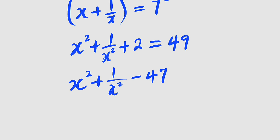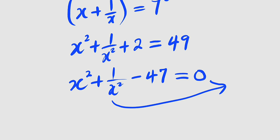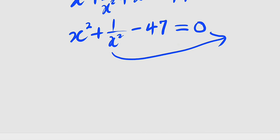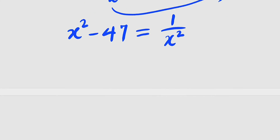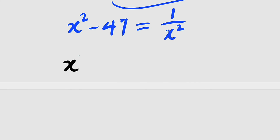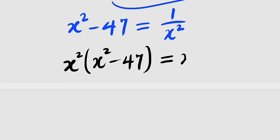Now I would like to take 2 to the right hand side — it becomes negative. To the left hand side, we have x squared plus 1 divided by x squared minus 47, because 49 crosses over and we have 2 minus 49 equal to negative 47. And to the right hand side, we have 0. Now let us take the term 1 divided by x squared to the right hand side, so we are left with x squared minus 47 equal to 1 divided by x squared.